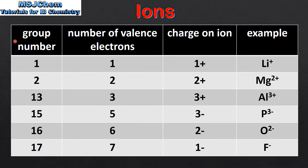Next we look at the relationship between the group number in the periodic table, the number of valence electrons, and the charge on the ion. Starting with group 1 elements, which have 1 valence electron — they can lose this 1 valence electron to form 1+ ions. An example is the lithium ion.